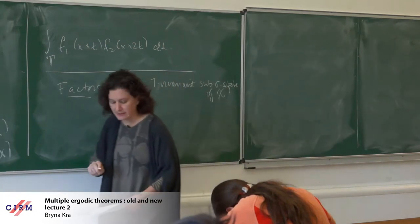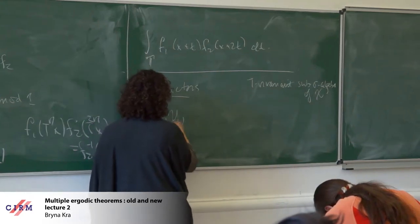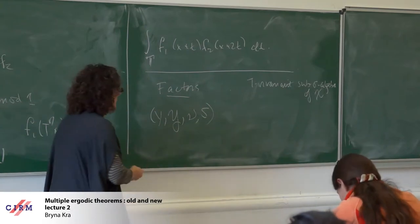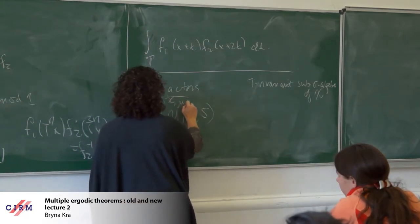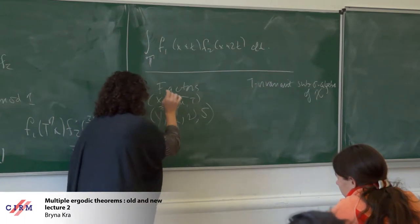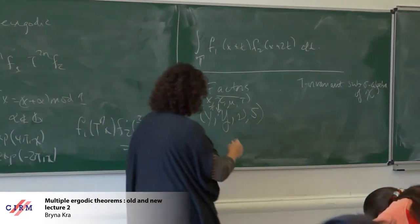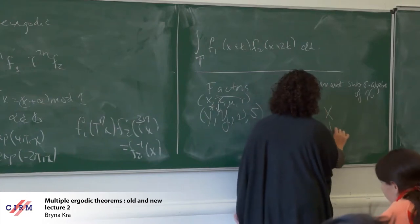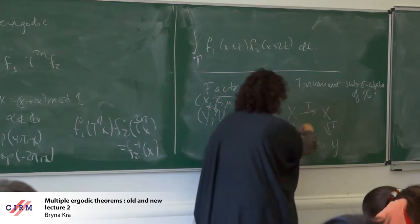This is no different than viewing it as a separate system. I could write this as Y, curly Y, nu, S, to be completely clear, and my original system being X, mu, T — and I didn't leave much room for the factor map pi going between these two systems, but the factor map intertwines the dynamics.